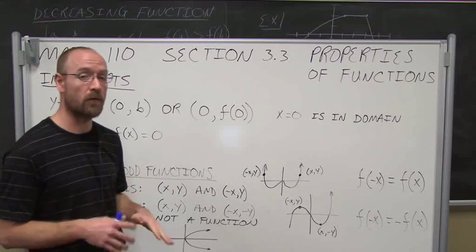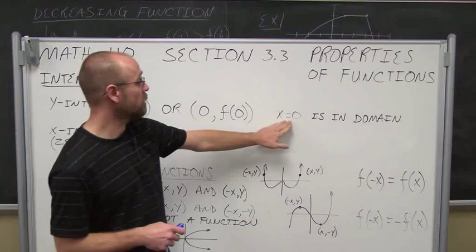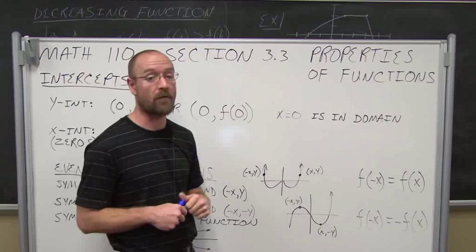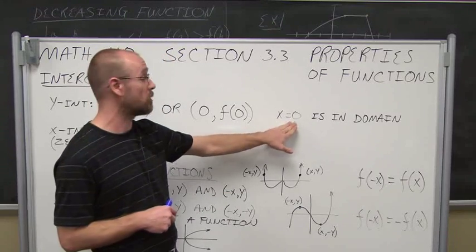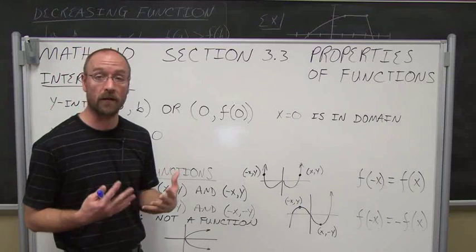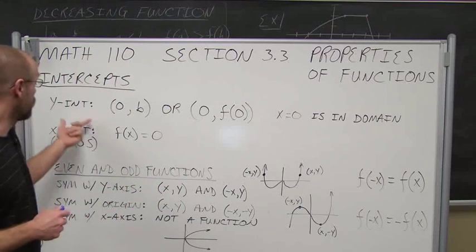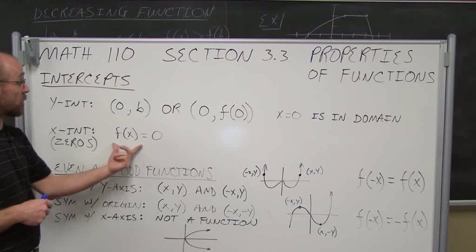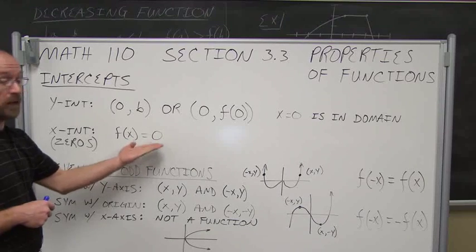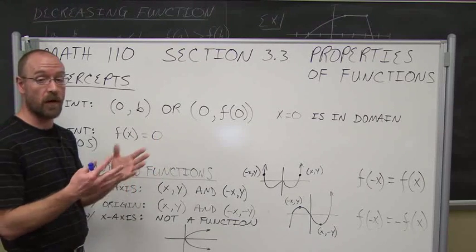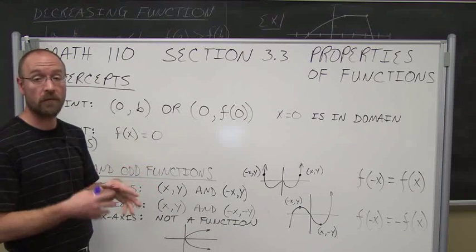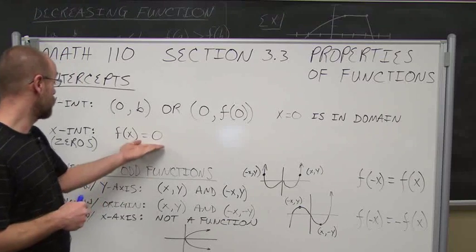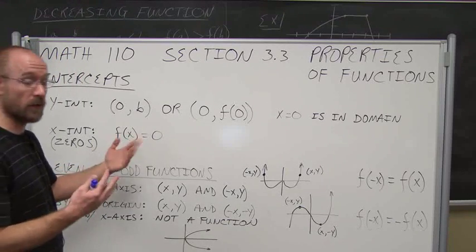One thing we always have to be aware of when dealing with functions is that x equal to 0 must be in the domain. If not, then we don't have a y-intercept. The other intercept we can find is the x-intercept, where we set the function equal to 0 and find any solutions. There might be multiple solutions — no intercepts, 1, 2, 3, or even more, depending on the degree of the polynomial.